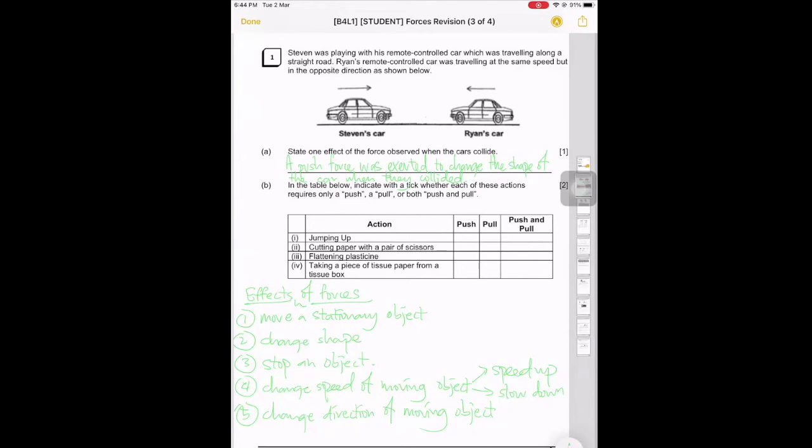Okay, so for 1B, right? We go through the answers. So, jumping up is a push, right? And then you're cutting paper with a pair of scissors, right, Jayden? It's push and pull. Because in the scissors, there are two blades. One of the blade is pushing against the paper. The other blade is pulling into the paper, right? So, it's a push and pull. Okay, flattening plus the... I think it's just a push, right? Taking a piece of tissue paper out of a box, it's pull, okay? So, with that, it will be your answer for 1B.